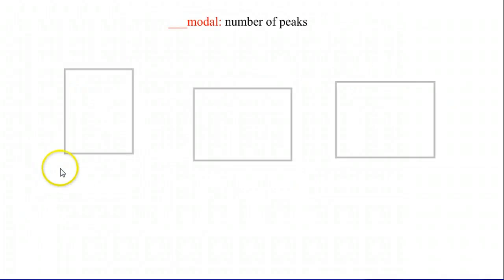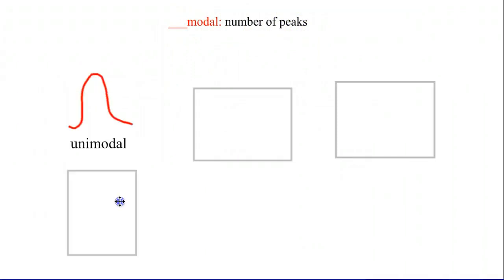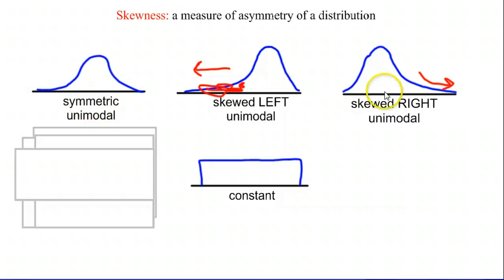Now onto those peaks. Whenever you put something in front of modal, you're talking about the number of peaks that you have in your graph. So for example, a unimodal graph has one peak, just like all of the graphs that we saw right here. These are all unimodal.